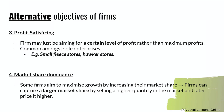Profit satisficing is when a firm is satisfied with a certain level of profit and basically stops selling the good or service once that level is attained — rather than trying to maximize profit. Examples include hawker stores and small flea market stores.